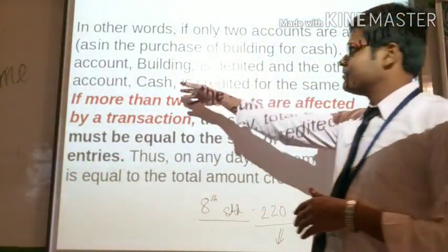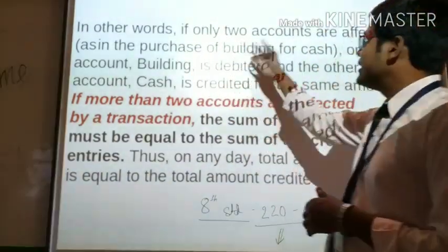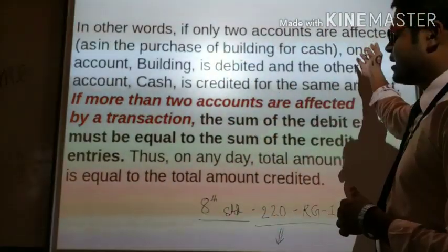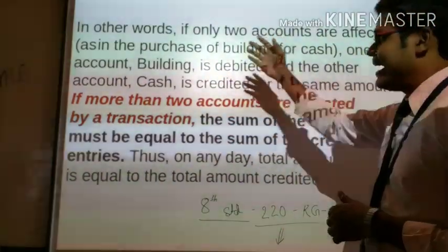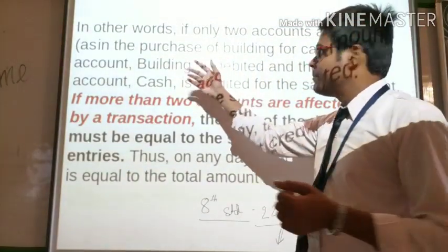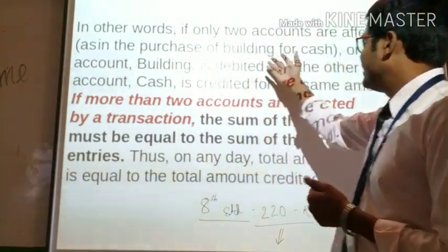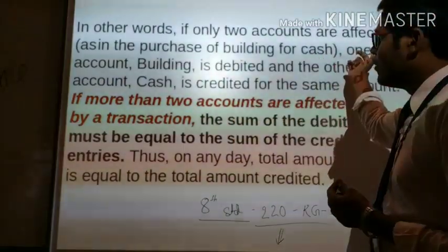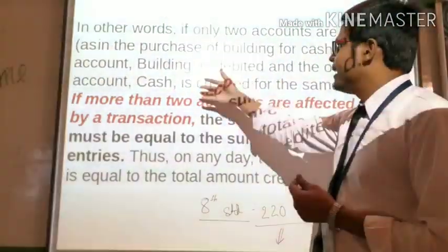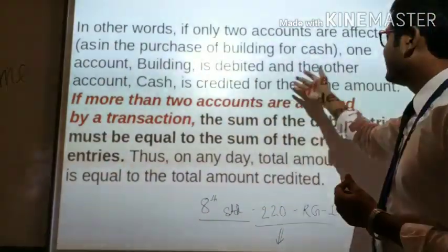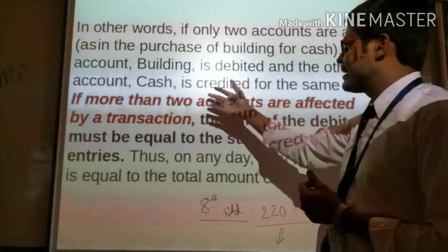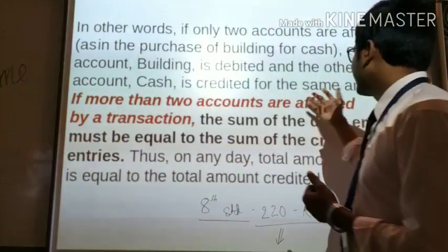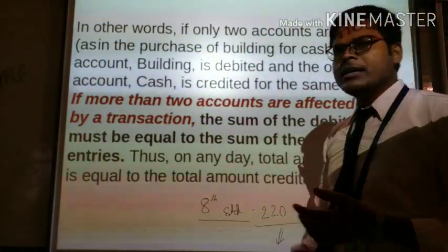In other words, if only two accounts are affected, as in purchase of goods for cash, one account — goods — is debited and the other account — cash — is credited for the same amount.